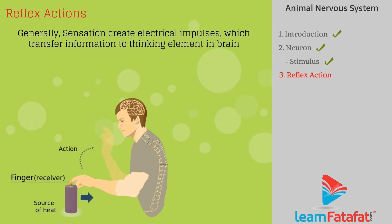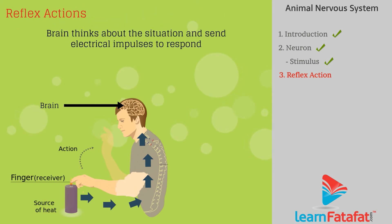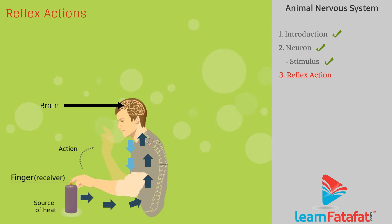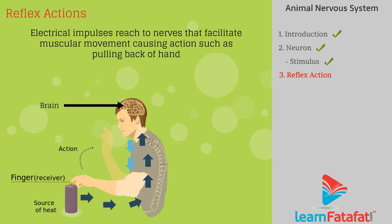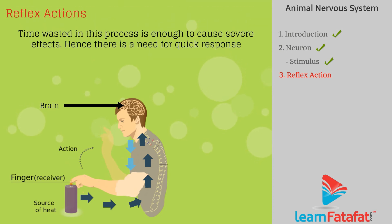Normally, a sensation creates electrical impulses which transfer information to the thinking element in the brain. The brain thinks about the situation and sends electrical impulses to respond. These electrical impulses reach the nerves that facilitate muscular movement, causing an action such as pulling back of the hand. But the time wasted in this process is enough to cause severe injury.